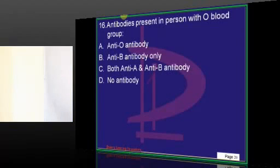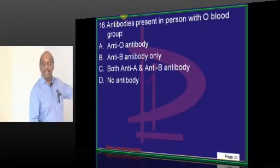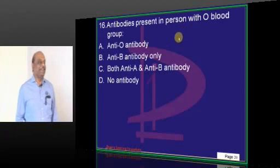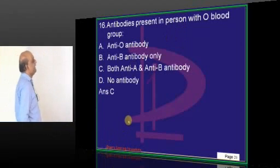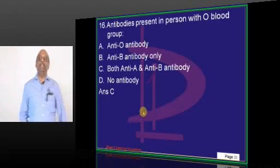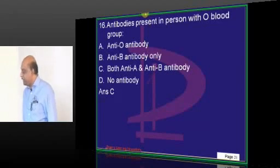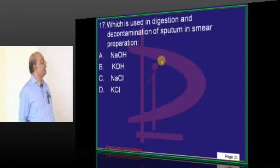In a blood group O patient, both anti-A and anti-B antibodies will typically be positive — that is what you need to basically remember.